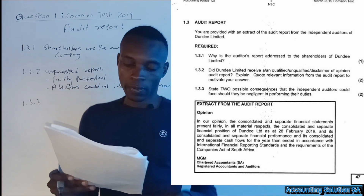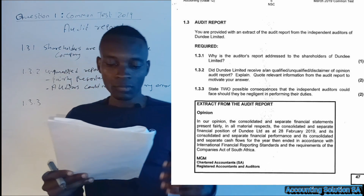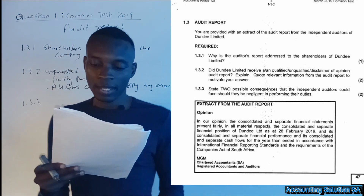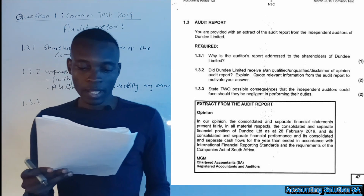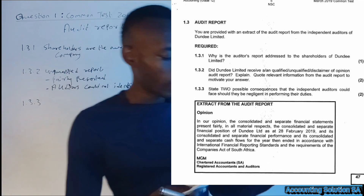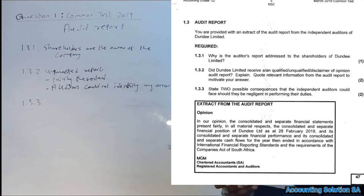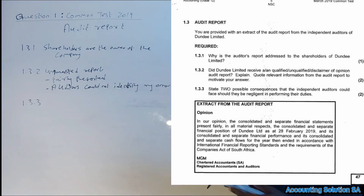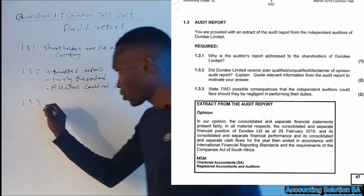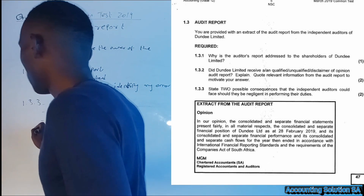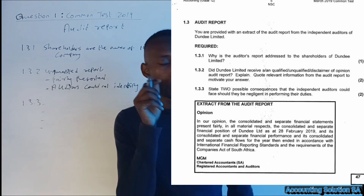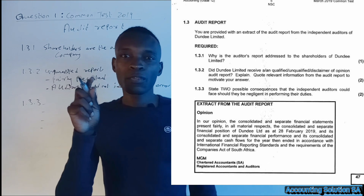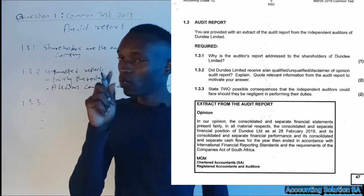Question 1.3.3 states: give two possible consequences that independent auditors could face should they be negligent in performing their duty. This question is based on the auditors themselves, not on shareholders. You need to consider what could happen if an auditor is negligent. Some companies pay money to auditors in order for them to express the wrong opinion — such as expressing unqualified when something went wrong.